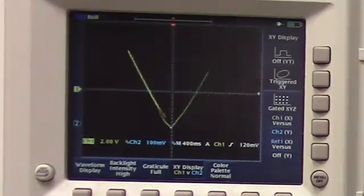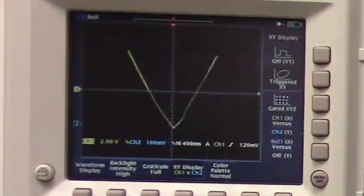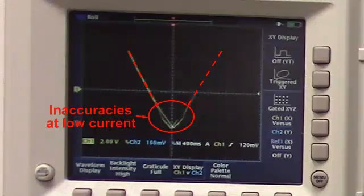We can switch the scope to XY mode to see the sensor output versus current. The response is pretty linear with some inaccuracies at low current, but this is ideal for overcurrent protection.